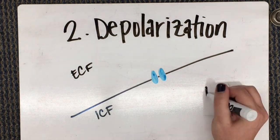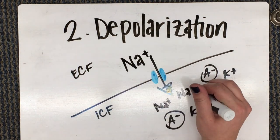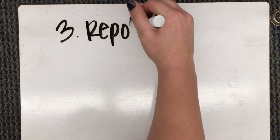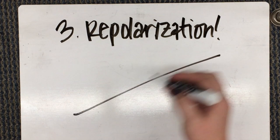As sodium rushes into the cell, the intracellular fluid increases in charge, causing the charge of the cell to move closer to zero or become more positive.